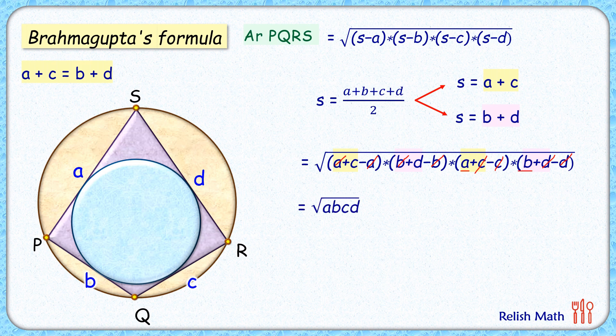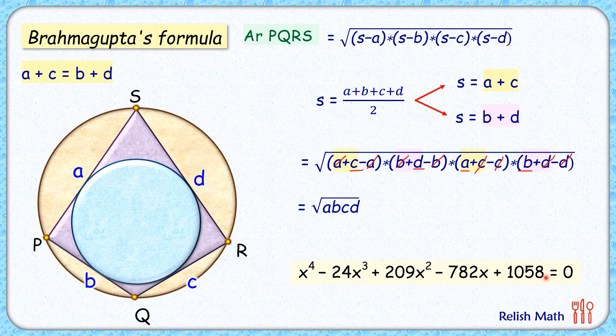Now, how to find this value? It's given that the sidelines a, b, c, d are the roots of this biquadratic equation. We know that for a biquadratic equation, the product of roots is given by the constant term divided by the coefficient of x^4. So the product abcd = 1058.